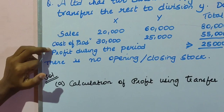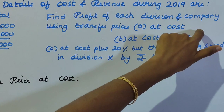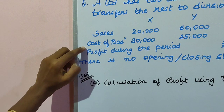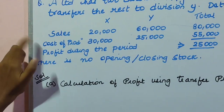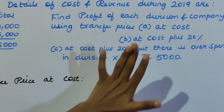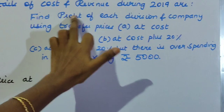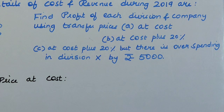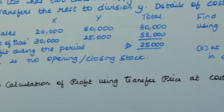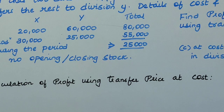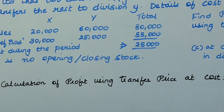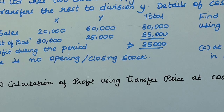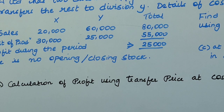So here you have to consider cost. The first point we are going to find is the profit of each division and the company at cost — calculation of profit using transfer price at cost. In order to find profit, you subtract sales minus total cost to get profit.